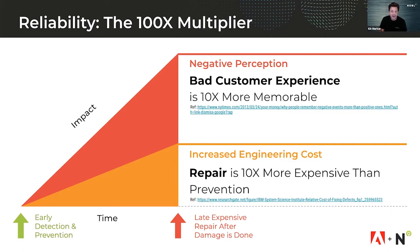On top of the reputation of having a bad experience, if you can find a problem in development, it's significantly cheaper than fixing it in production. So when you're thinking about reliability for your organization, the goal is to basically not have people have a bad experience with your software, and you want to keep the cost down by fixing things early before they get out to customers.